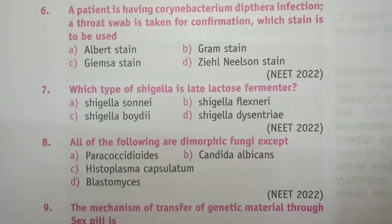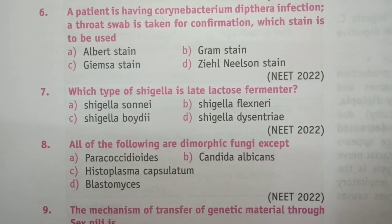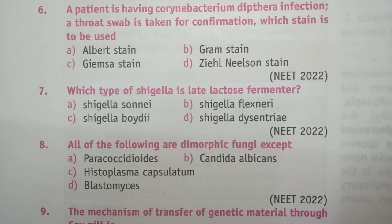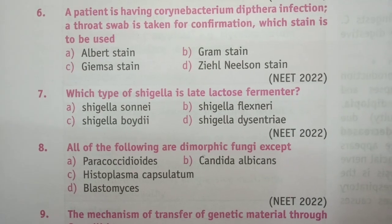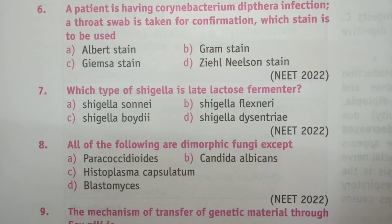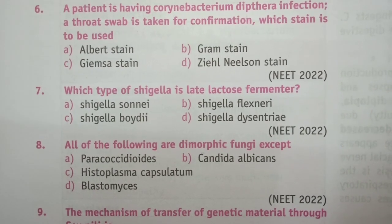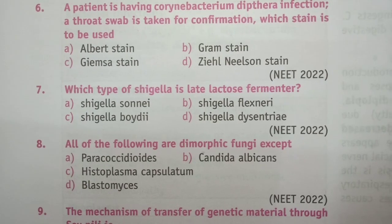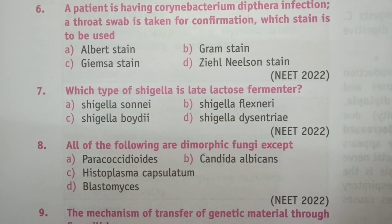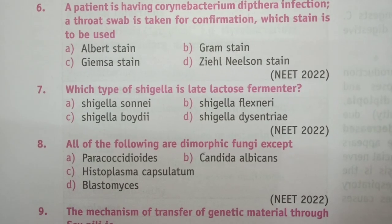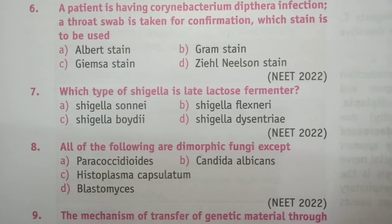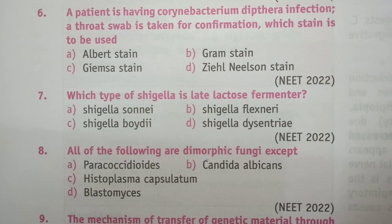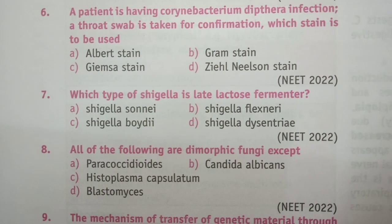Question 8: All of the following are dimorphic fungi EXCEPT: Paracoccidioides, Candida albicans, Histoplasma capsulatum, or Blastomyces. The answer is B, Candida albicans.